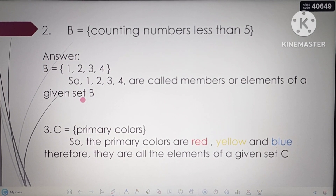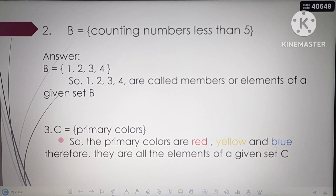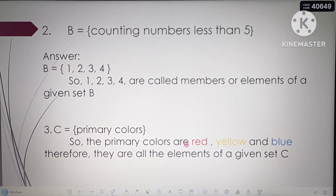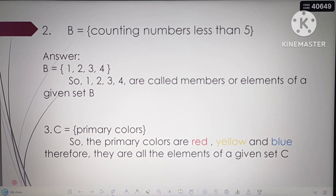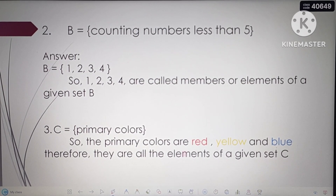For number 3, set C is equal to the primary colors. The primary colors are red, yellow, and blue. Therefore, red, yellow, and blue are all the elements of set C. Remember, the primary colors are only 3: red, yellow, and blue.